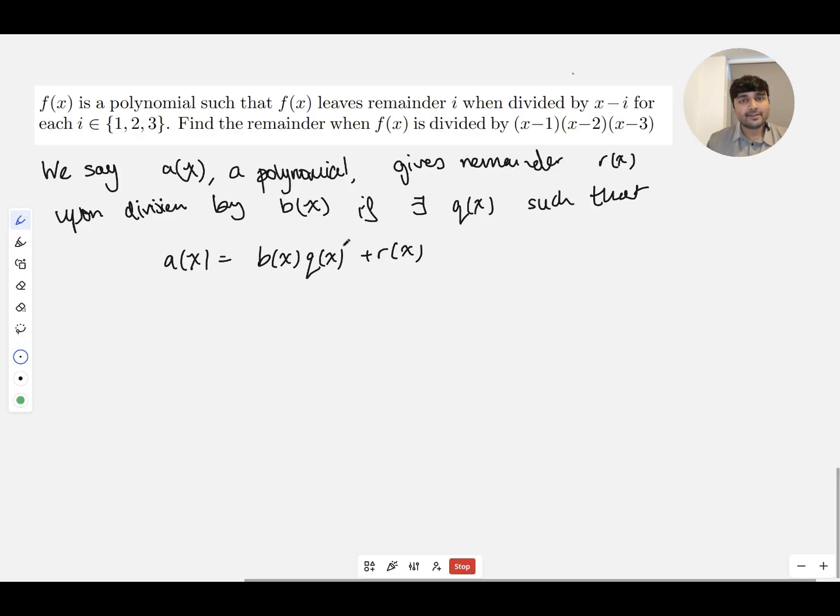And we're going to be using this definition here. So we have that f of x leaves a remainder of, let's start with i equals 1, when we divide it by x minus 1. And so therefore f of x equals (x minus 1) times some function g of x, some polynomial g of x, plus 1. Except we don't know anything about g yet.